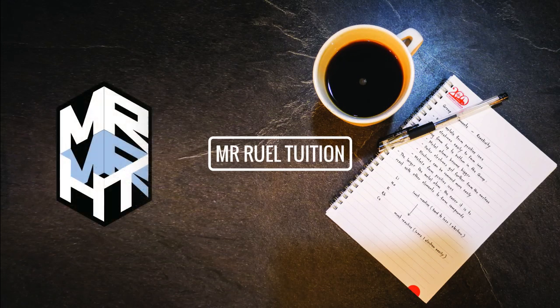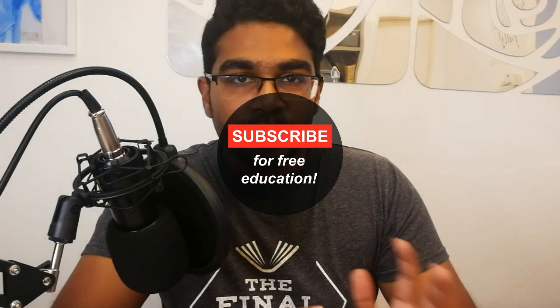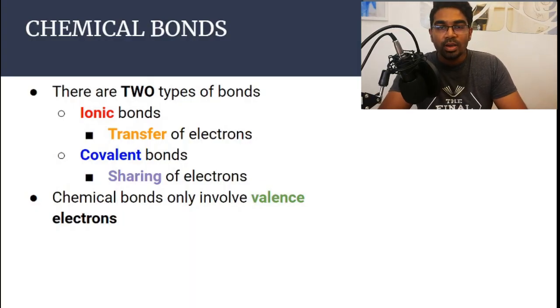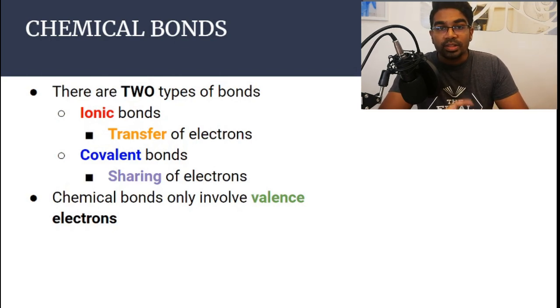In this video we'll be covering what chemical bonds are and how ionic bonds form. Before we dive into ionic bonds, a chemical bond is formed when there is movement of electrons — electrons are either transferred or shared among two atoms. If electrons are transferred, an ionic bond is formed; if electrons are shared, a covalent bond is formed. Covalent bonds will be covered in another video, but this video focuses on ionic bonds.